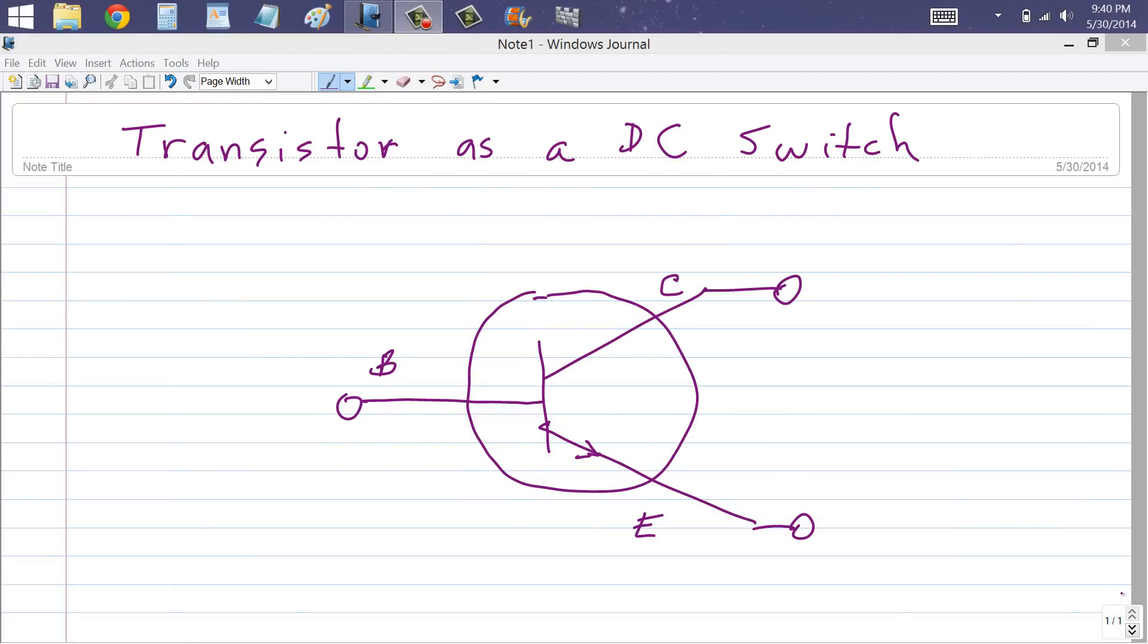Stan Gibalisco here to explain how a transistor can operate as a direct current switch where you can use a small current to switch a large current. This is what you're looking at here: an NPN bipolar transistor, the schematic symbol for an NPN transistor.